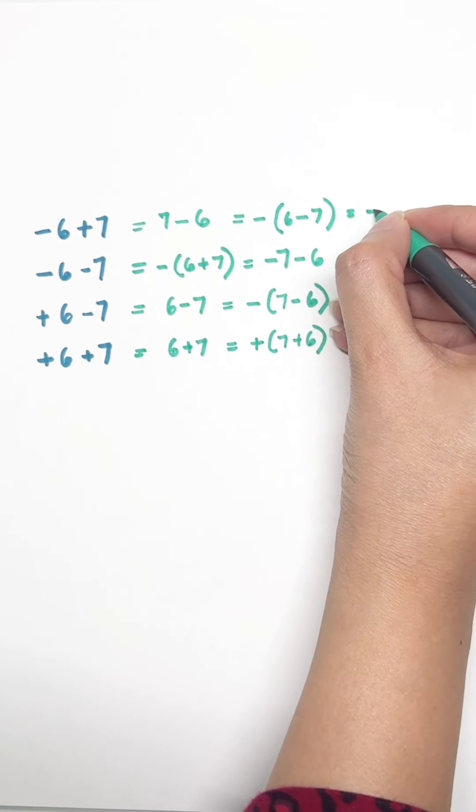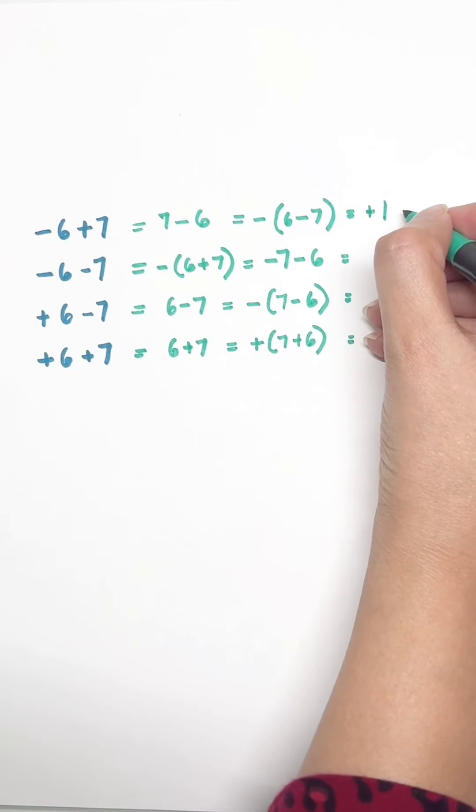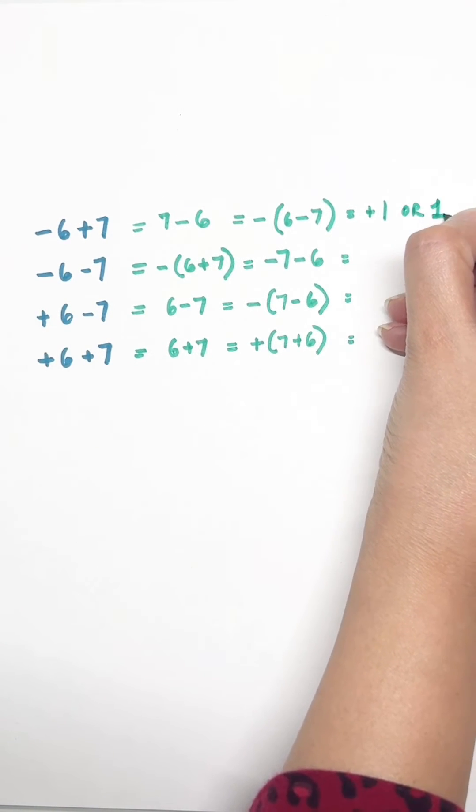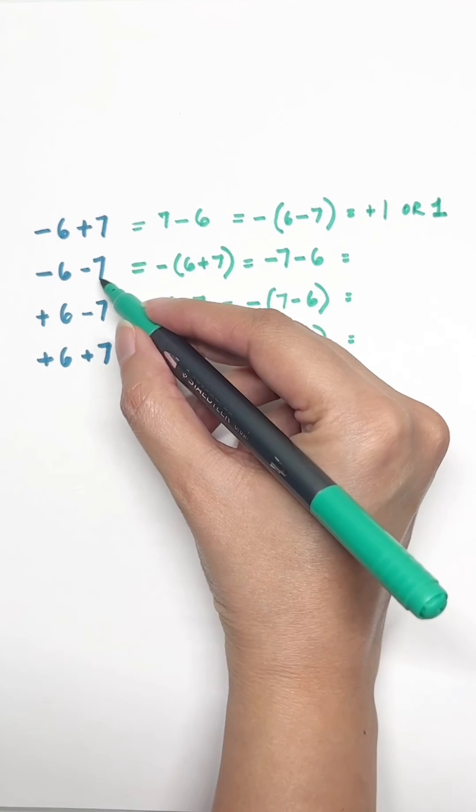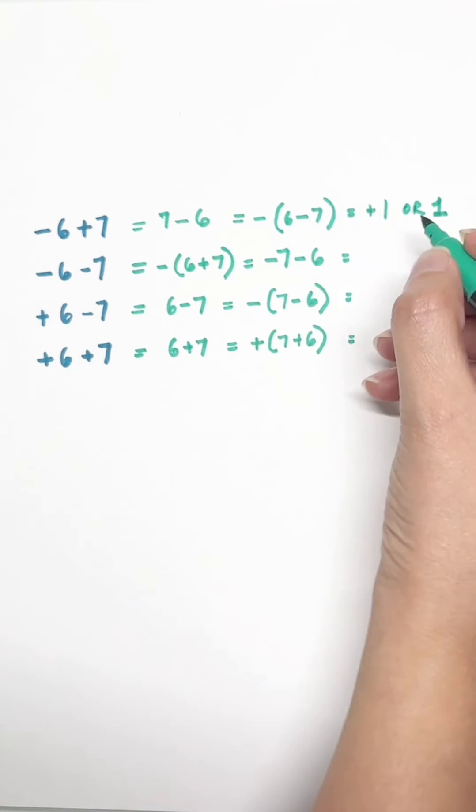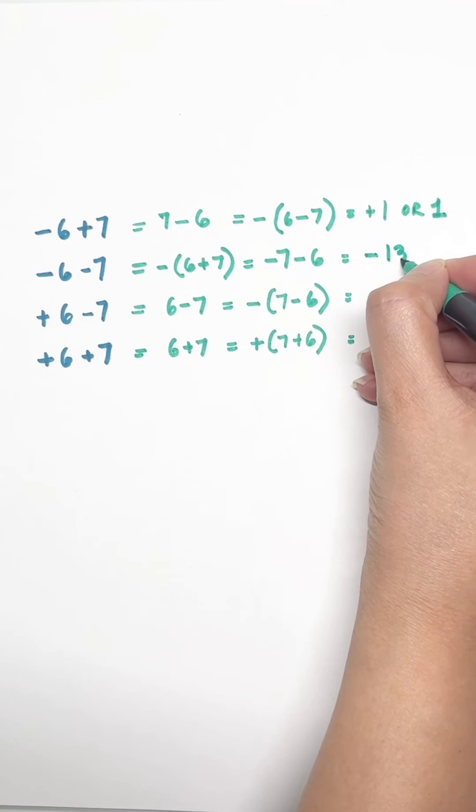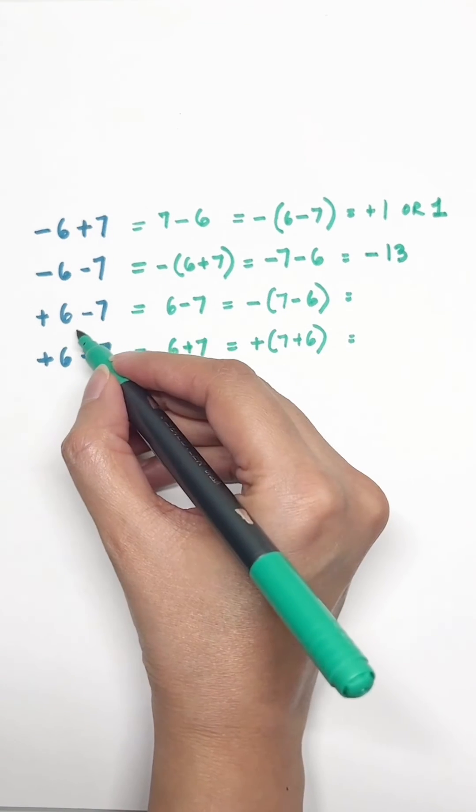In the first one, 7 is plus, so we know the answer is going to be plus. But it's plus and minus, so it's going to be 1, because 7 - 6 is 1.